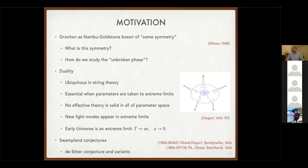If you think about the very high temperature limit of the universe, and think of temperature as the Euclidean circle on which you're doing computations, then going to extremely high temperature sounds like one of these limits where we're taking some moduli to an extreme limit. So it is perhaps not unexpected that we might encounter some kind of duality or a new description if we push the universe to an extremely high temperature phase.